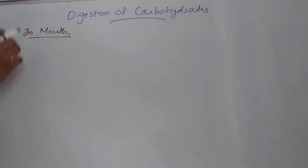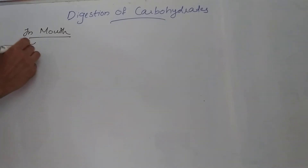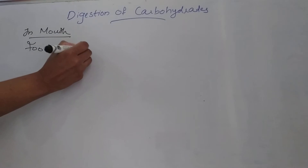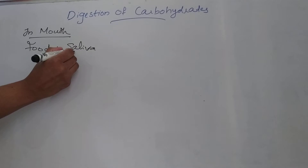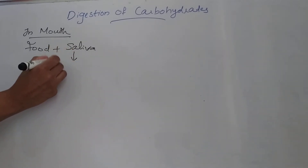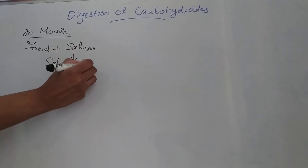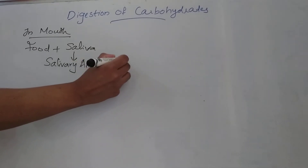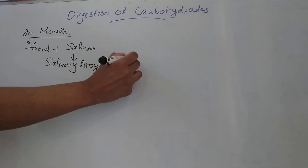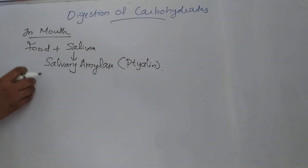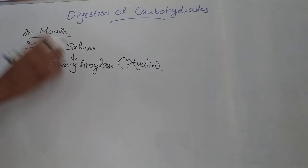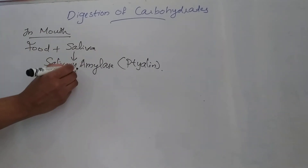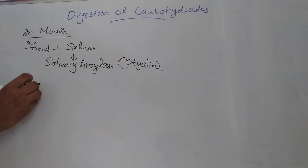Digestion of carbohydrates begins in the mouth. During mastication, food comes in contact with saliva, and the saliva contains an enzyme known as salivary amylase. This is a carbohydrate-splitting enzyme, also known as salivary alpha-amylase.